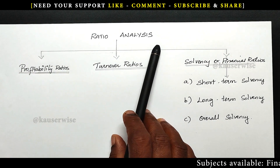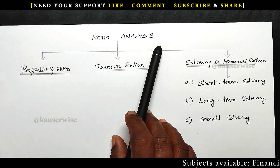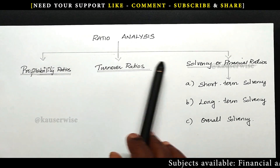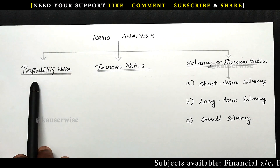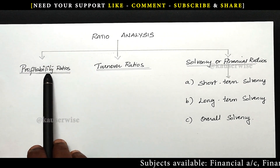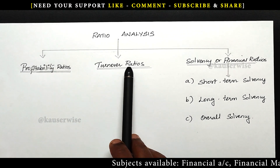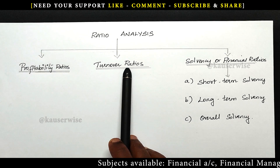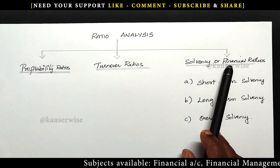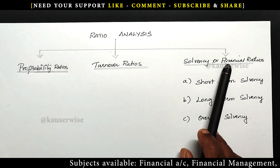Ratio analysis can be classified into three categories: number one, profitability ratios; number two, turnover ratios; number three, solvency ratios.